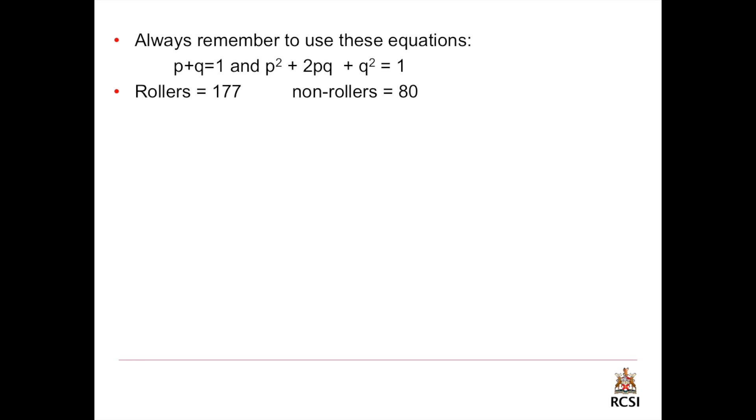We know that the number of rollers is 177 and the number of non-rollers is 80. Always, always look for the recessive first. And the recessive in this example is the non-rollers. Now calculate the total of the rollers and the non-rollers.